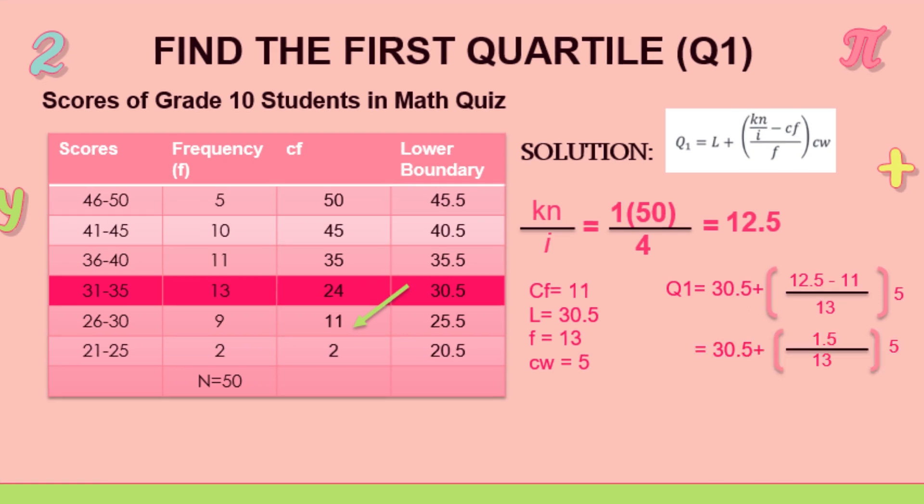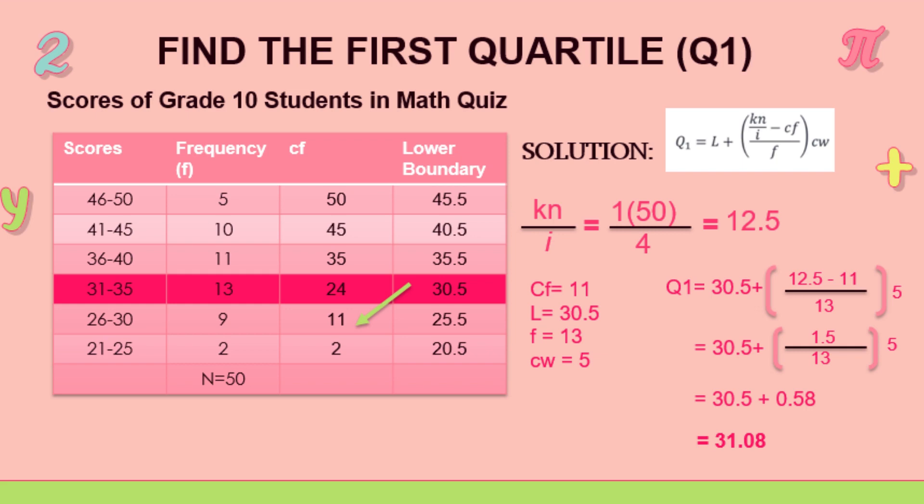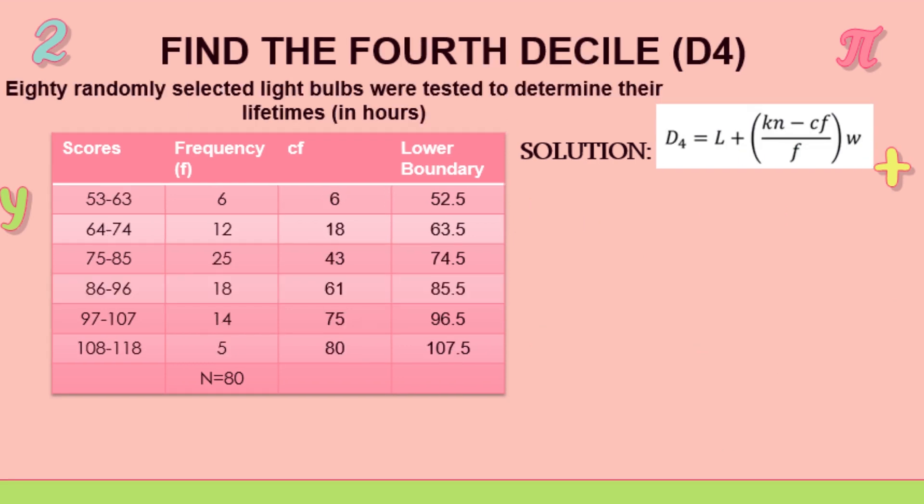So this is what we got, 1.5 over 13. And 30.5 plus 0.58 equals 31.08. That's our answer for the first quartile. For the second example, the same, but this time we have to find the fourth decile.